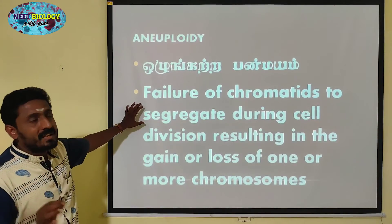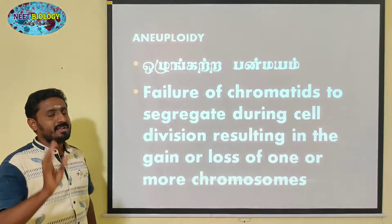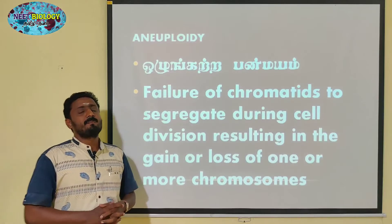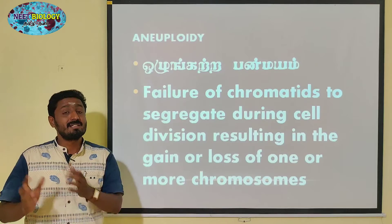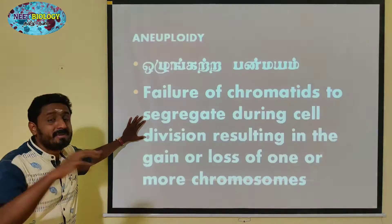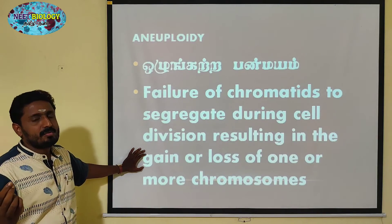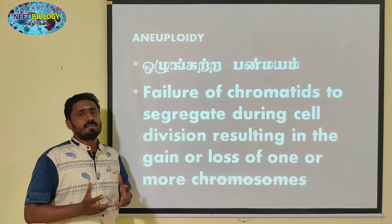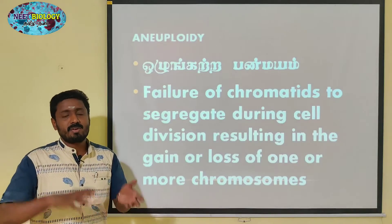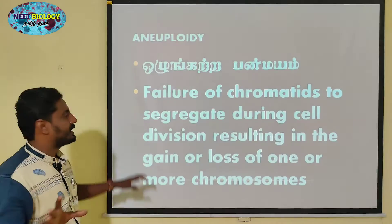Failure of chromatids to segregate during cell division results in gain or loss of one or more chromosomes. This is called non-disjunction. The loss or gain of one or more chromosomes leads to aneuploidy. The formulas are: 2n plus 1, 2n plus 2, 2n minus 2, 2n plus 1 plus 1, 2n minus 1, and 3n plus 1, representing different aneuploid conditions.